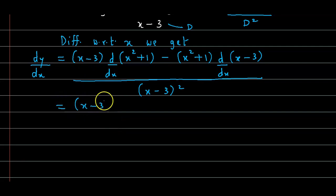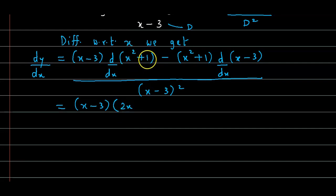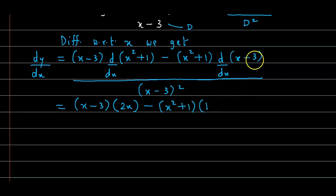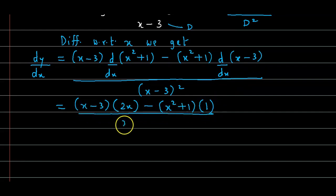So we have (x − 3) into the derivative of x² which is 2x, and derivative of 1 is 0 — bracket closes. Minus (x² + 1) into: derivative of x is 1, and derivative of 3 is 0, so overall that gives 1. Divided by (x − 3) squared.